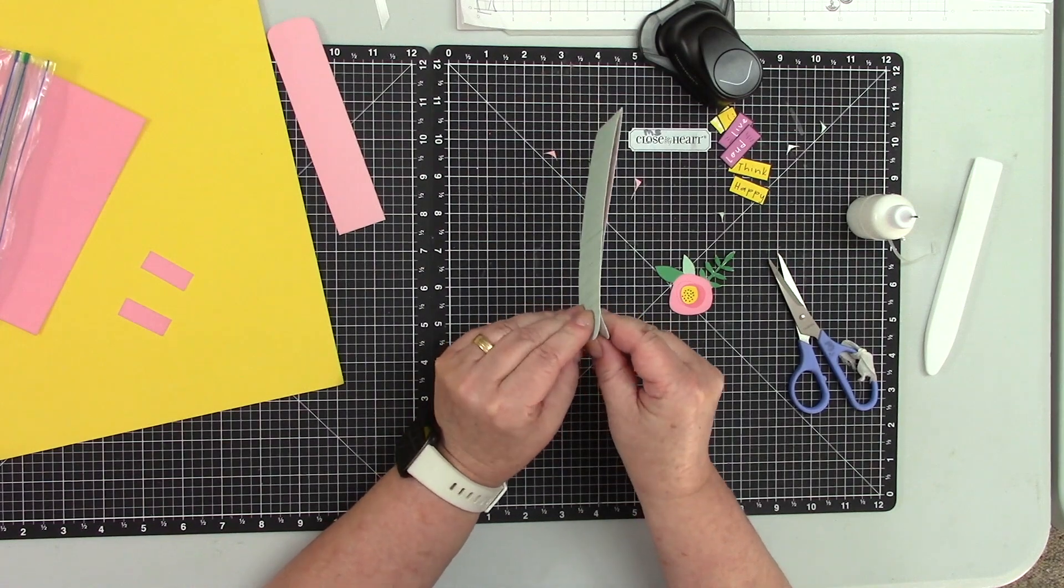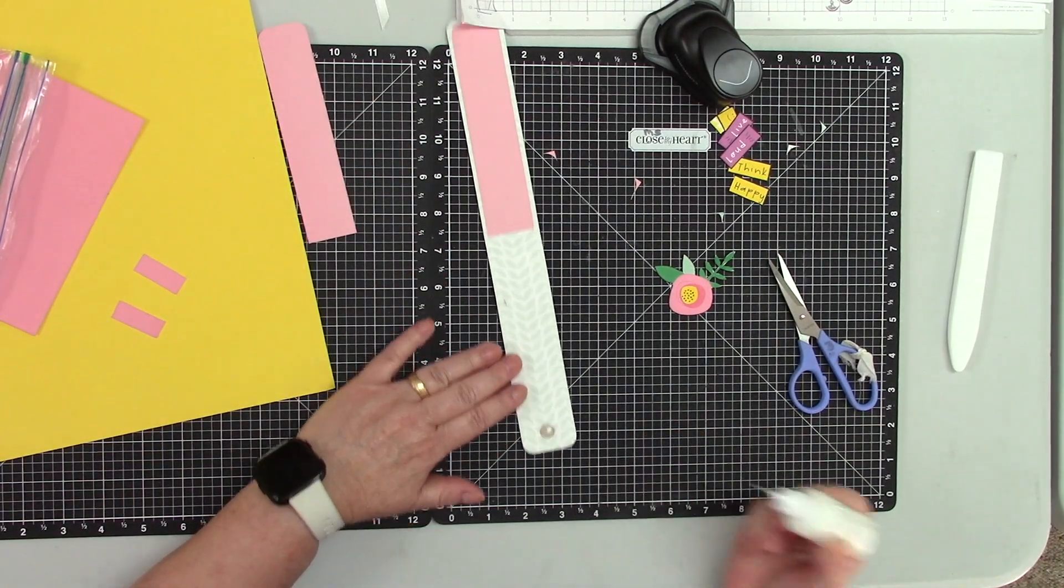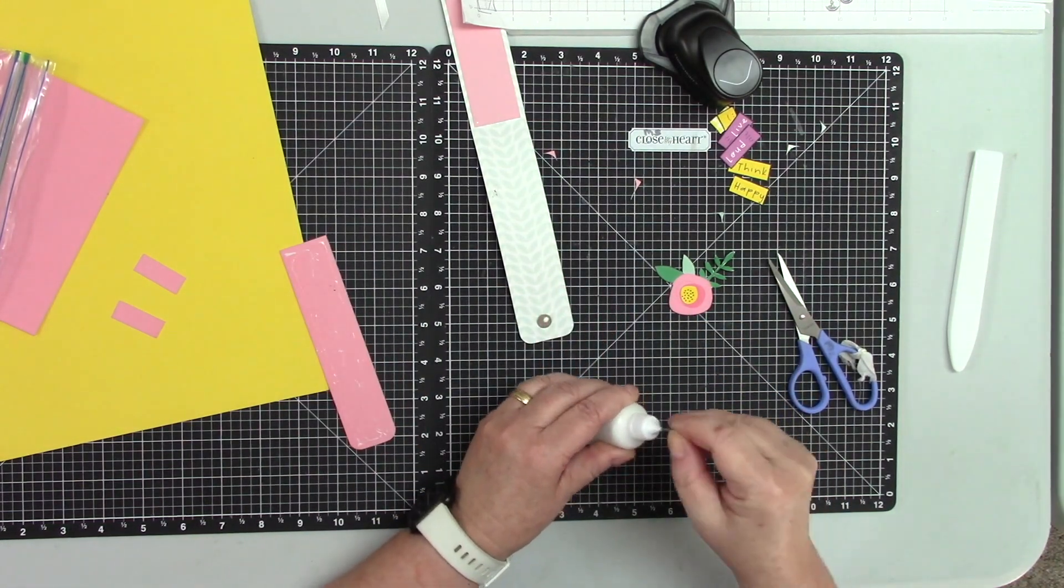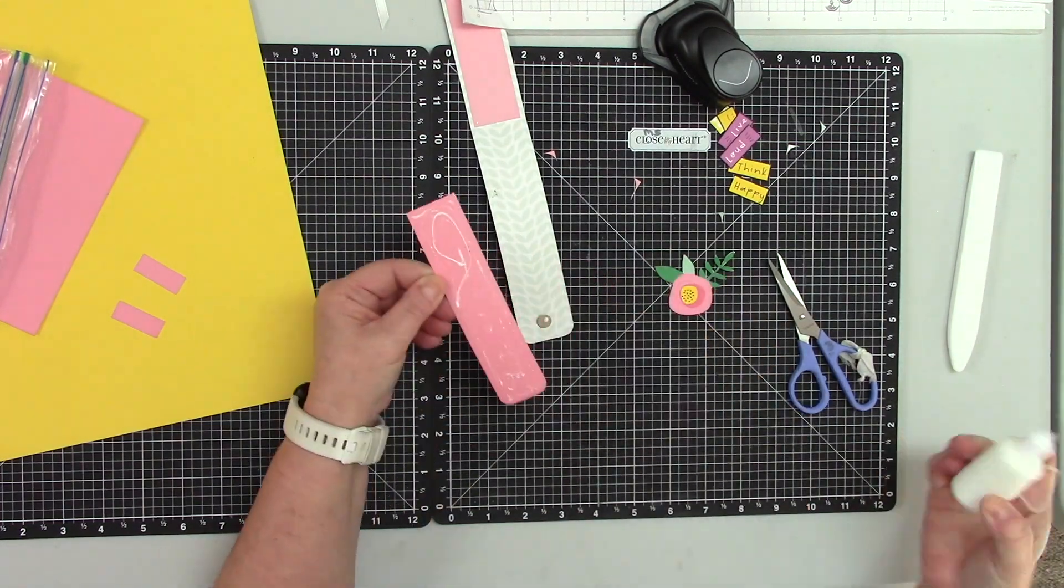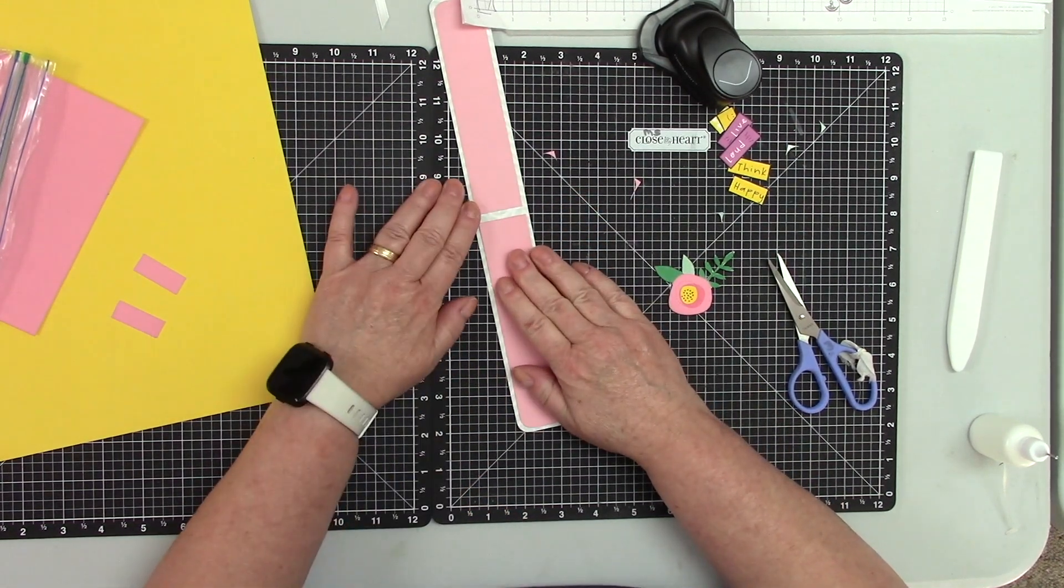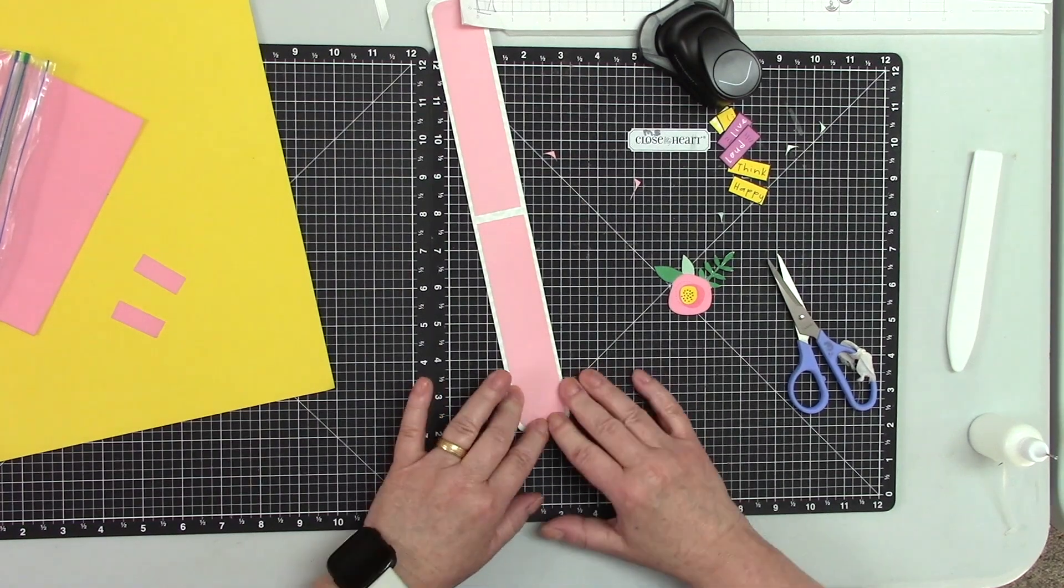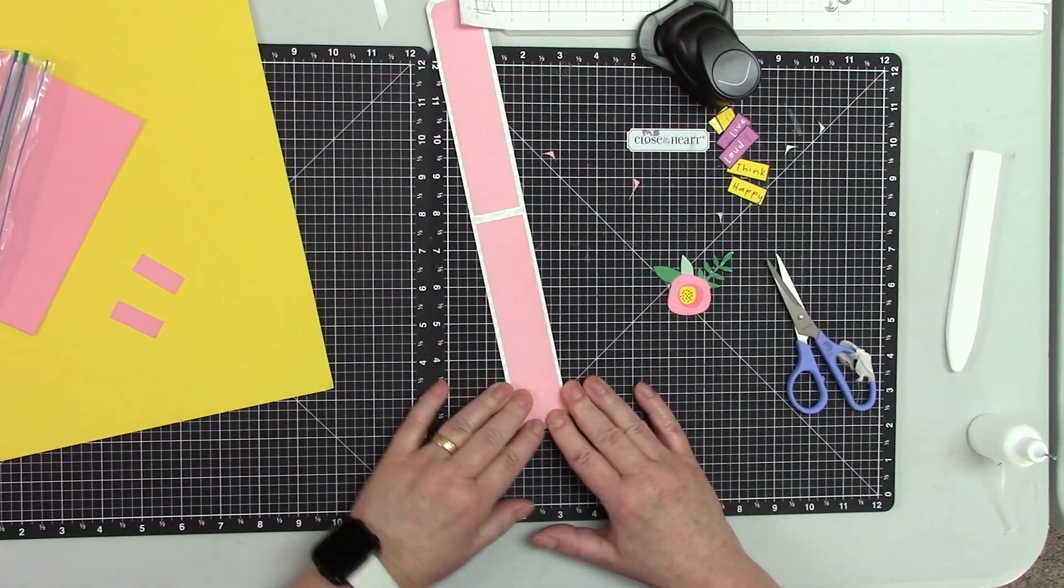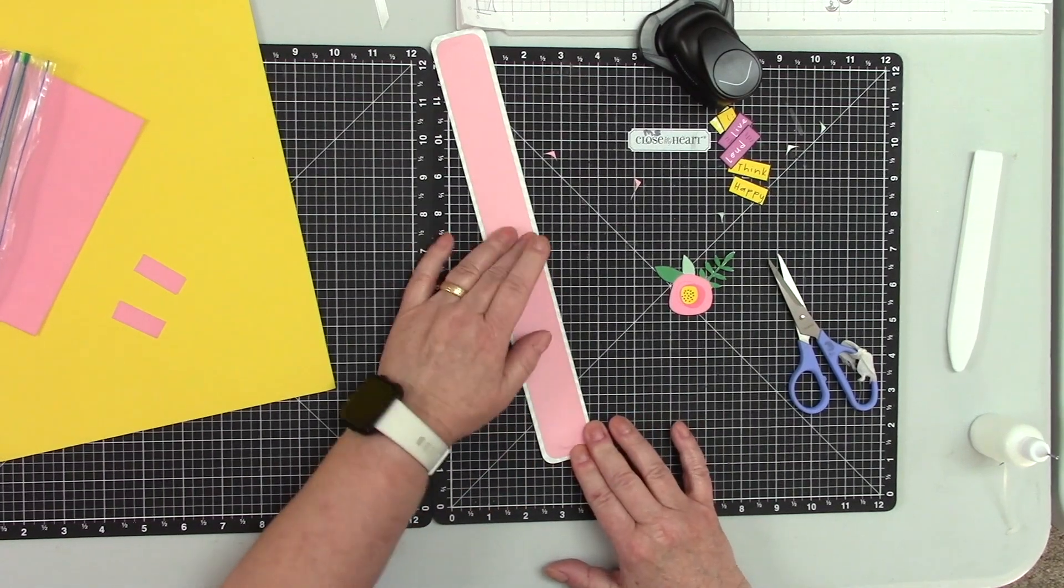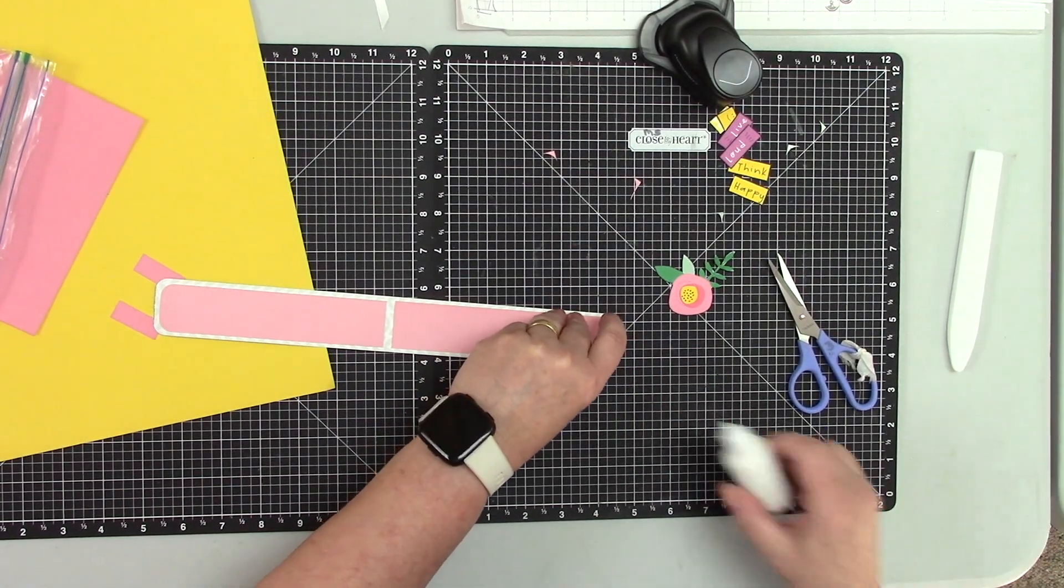And just hold it a little back. Open it very, very gentle. And we're going to put some on the top here again. Okay, just hold it a little back. And then basically this is it, right? You need a little more glue in here.